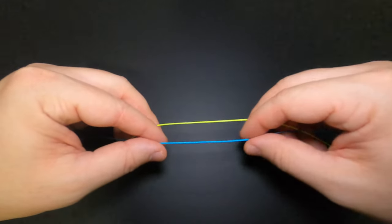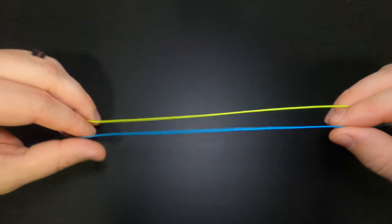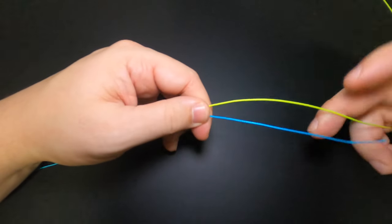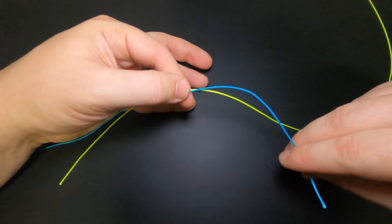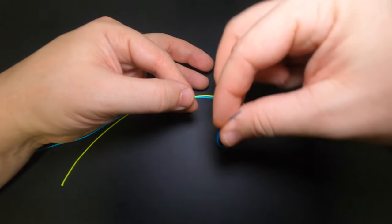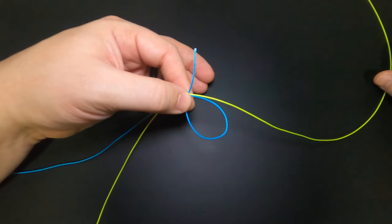To get started we just want to overlap our lines about eight inches just like that. At this point you're just going to pinch the two lines together somewhere right in the middle. It doesn't matter which side you start on, but I'm going to take this tag end and wrap it downward forming a loop and pinch that right over top of both lines just like that.